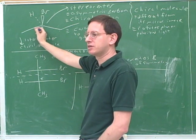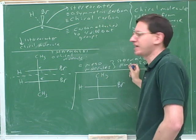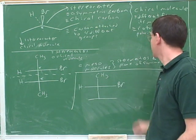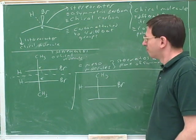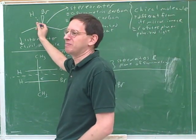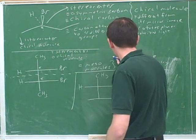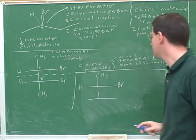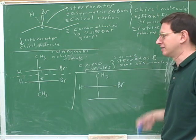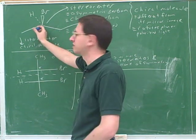Is this molecule meso? No. Although notice it does have half of the definition — it does have a stereocenter, but it doesn't have a plane of symmetry. If you only have one stereocenter, there's no way it could be meso. So I could build that into the definition of meso: meso means you have to have two or more stereocenters, because otherwise there's no way to have a plane of symmetry where the stereocenters on either side cancel each other out.